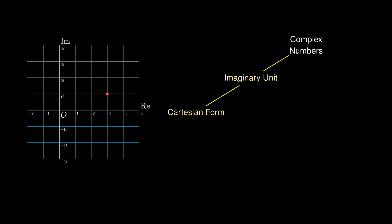We can represent the complex number 3 + i via the vector from the origin to the point (3, 1), and the complex number 1 + 2i via the vector from the origin to the point (1, 2). Adding complex numbers is akin to vector addition: taking 3 + i, sliding it over via 1 + 2i, and connecting the origin to the final point gives 4 + 3i.